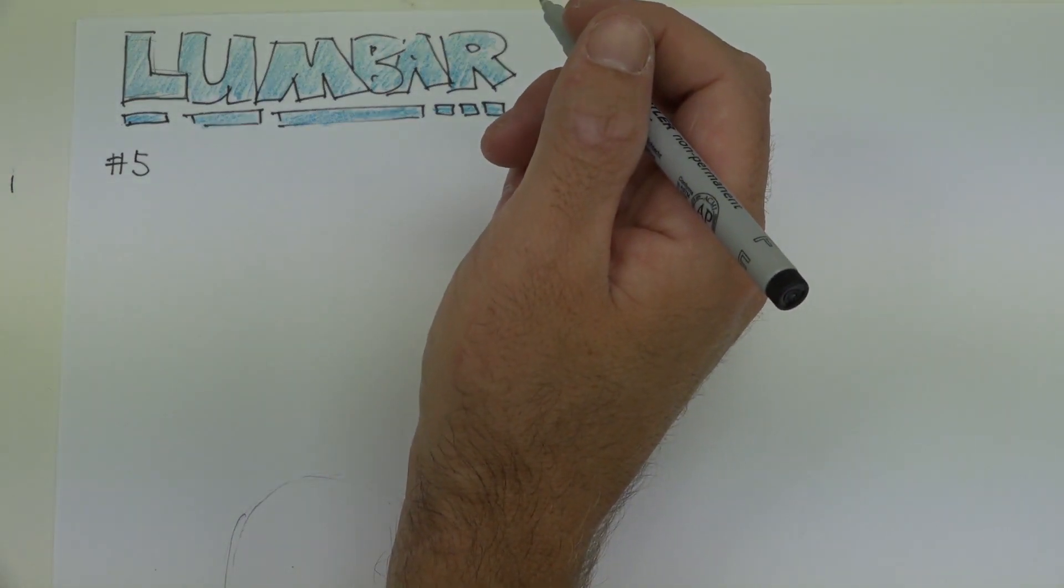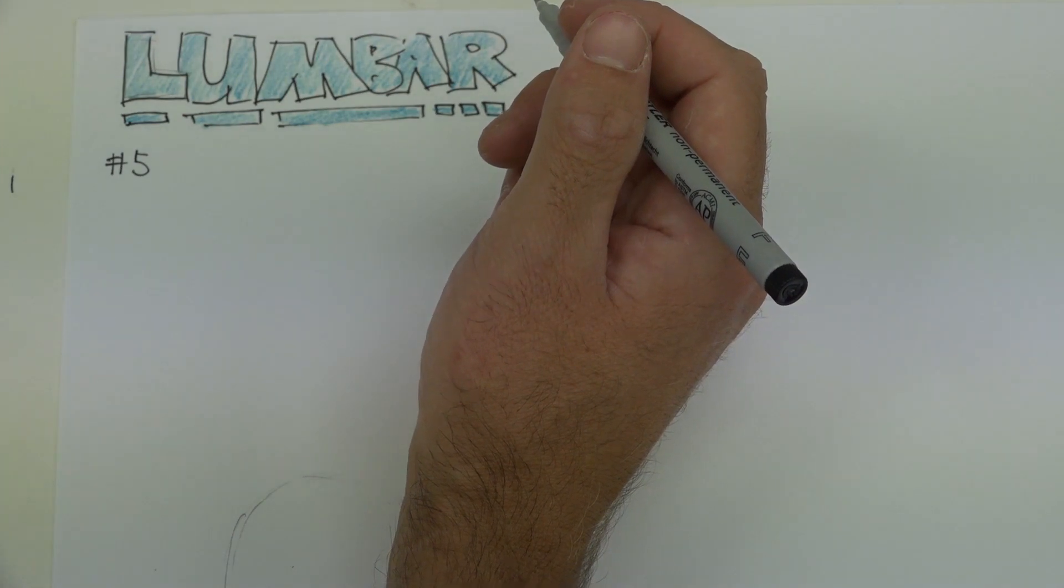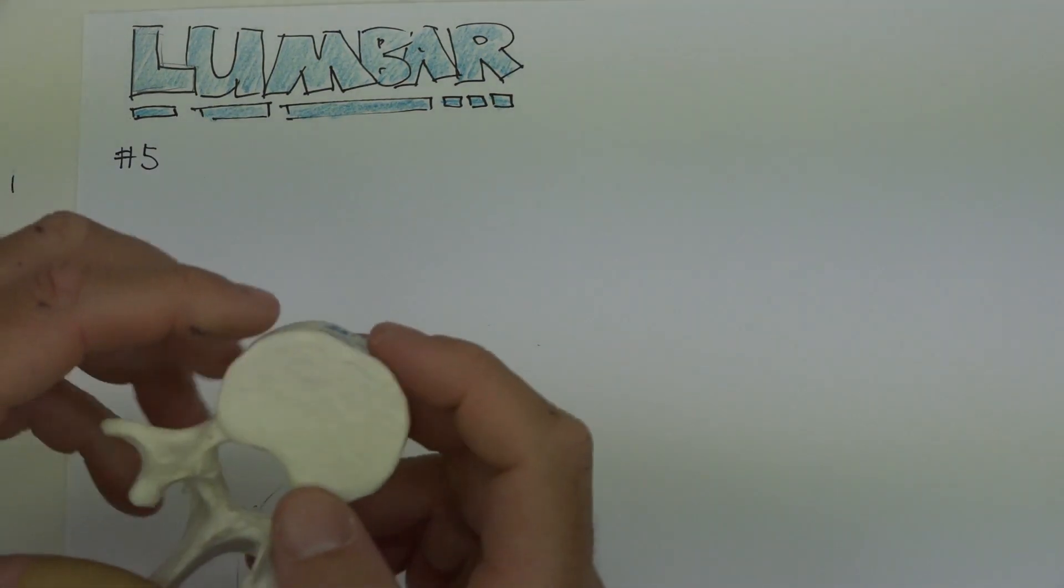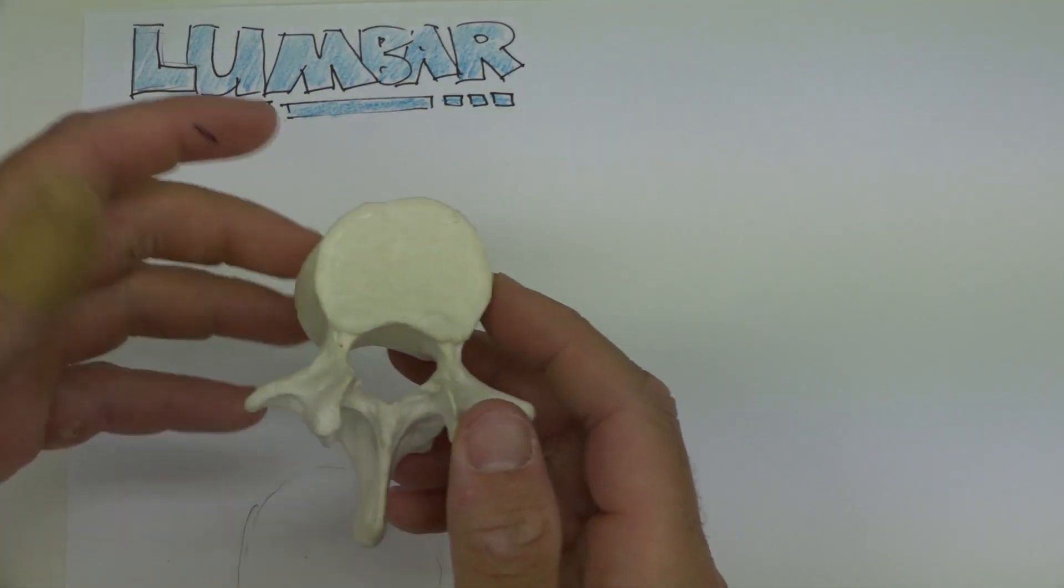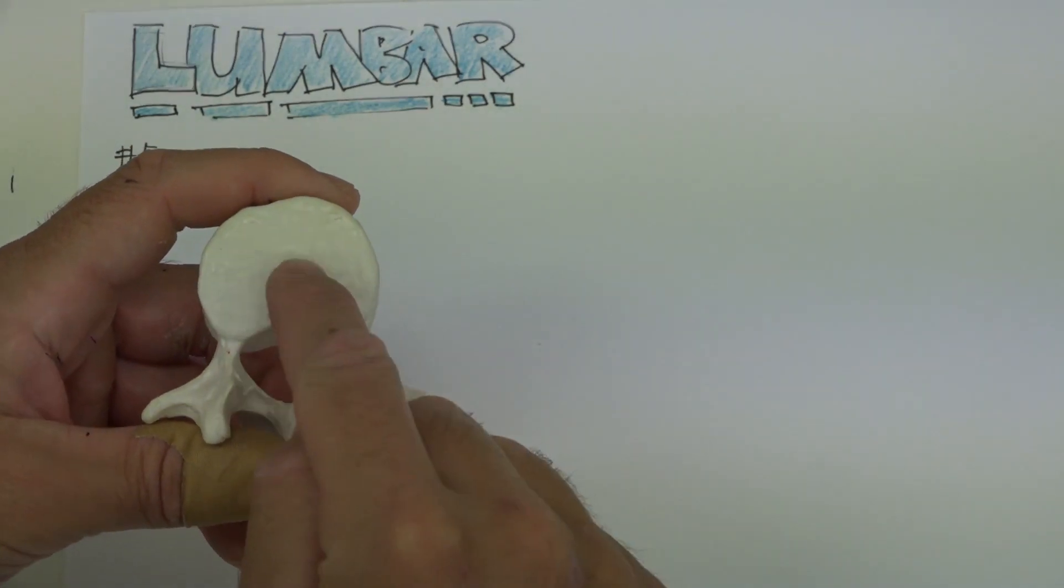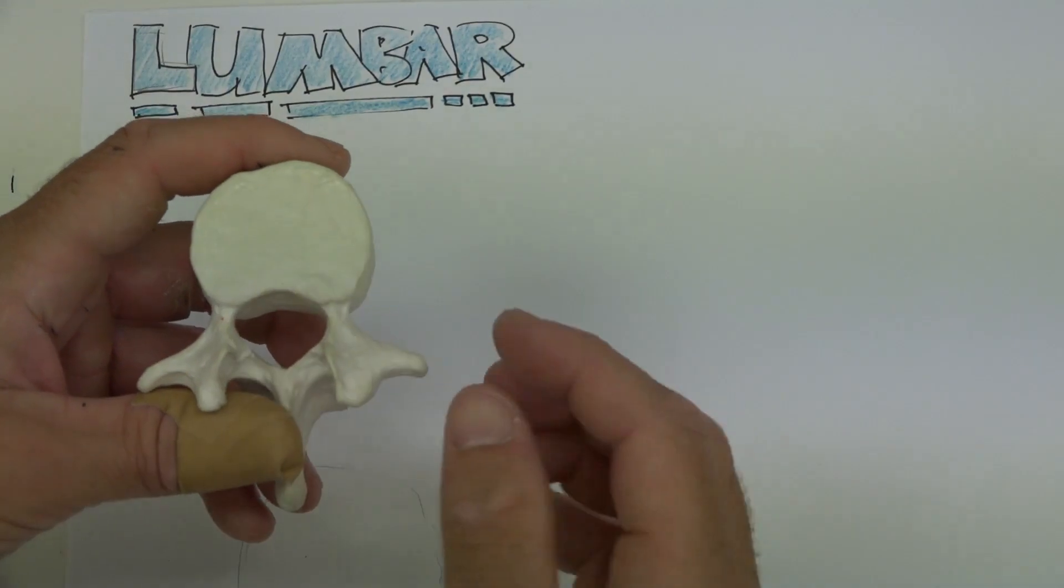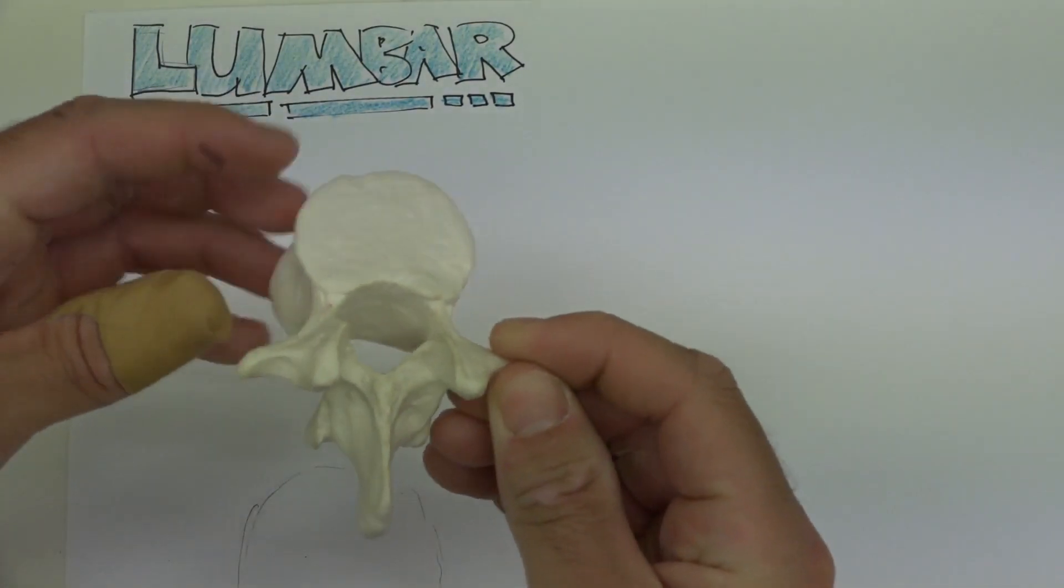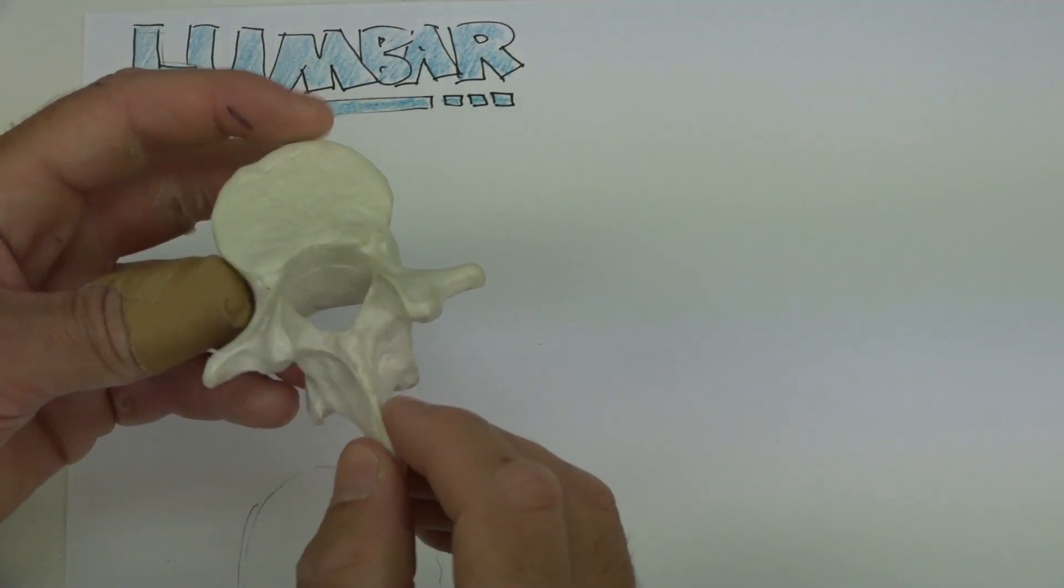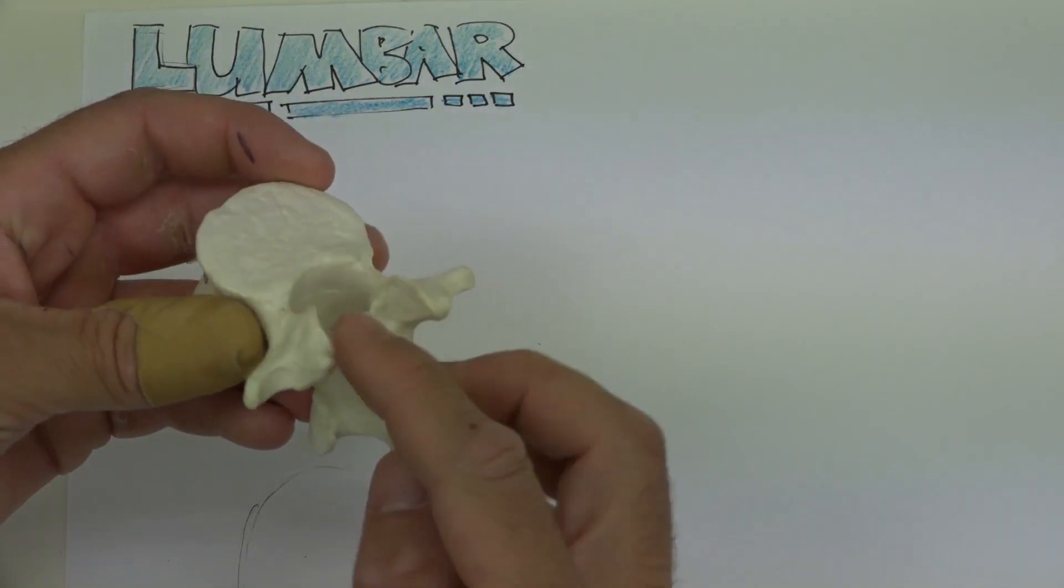If we have a look at some of the features of our lumbar vertebrae, we can see that they are primarily typical in their nature. So they've got a body, they have pedicles, they have a vertebral foramen, they have transverse processes, spinous processes, lamina, and articular facets.